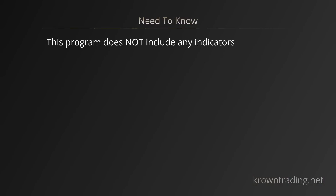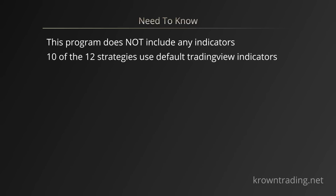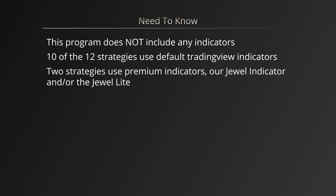Another thing I want to get out of the way is that this program does not include any indicators. In my opinion, not a big deal, because 10 of the 12 strategies you can use default indicators with — that's actually the way the data was derived. So you can rest assured it is not a big deal if you don't have the advanced stochastic, caretaker's RSI, or the JUUL, for example. The two strategies that do require an indicator would be the JUUL Light and the regular JUUL. You can get away with using the default ones, but if you do have access to the advanced stochastic or caretaker's RSI, you will theoretically have a chance to get better entries and better overall results than with the default indicators.